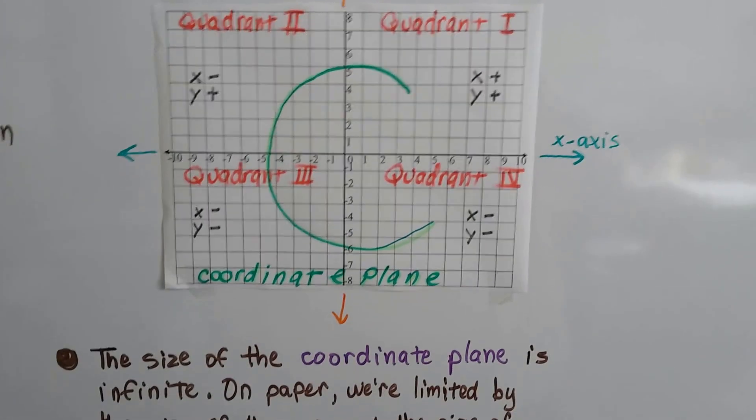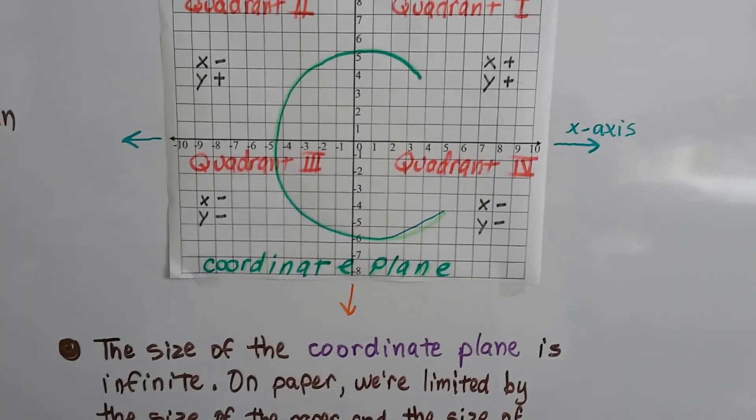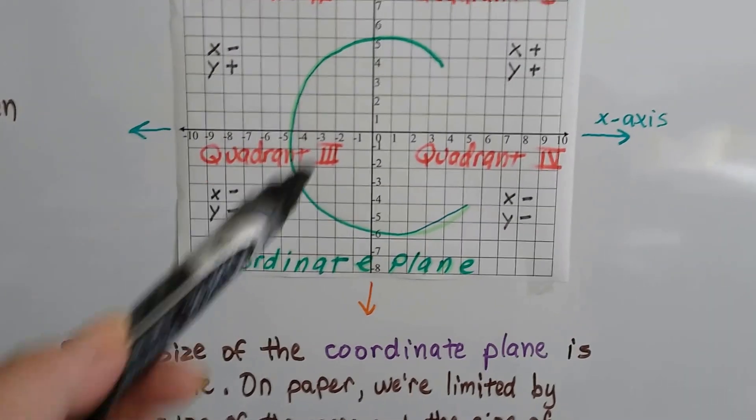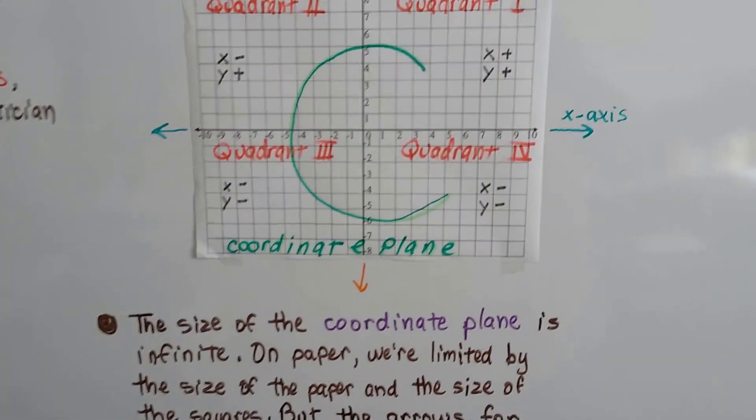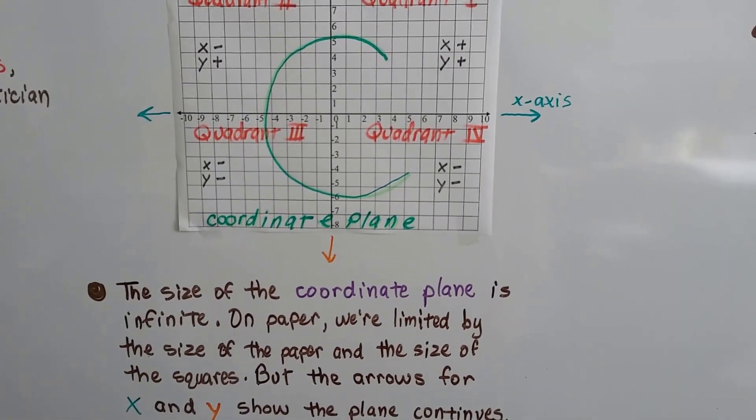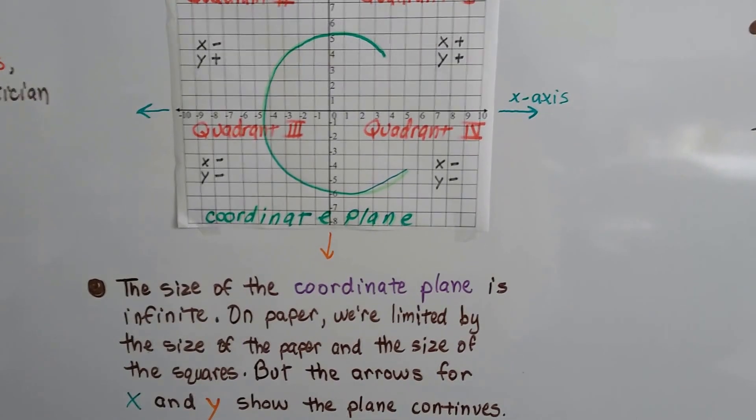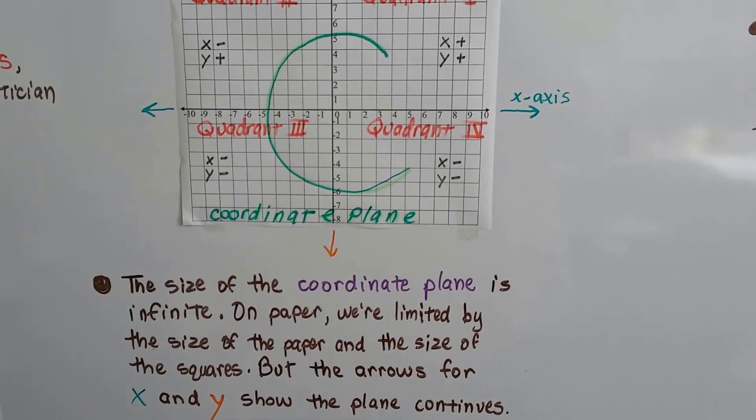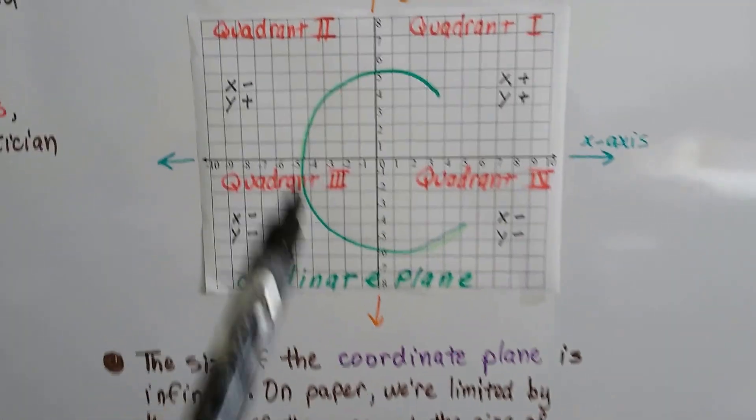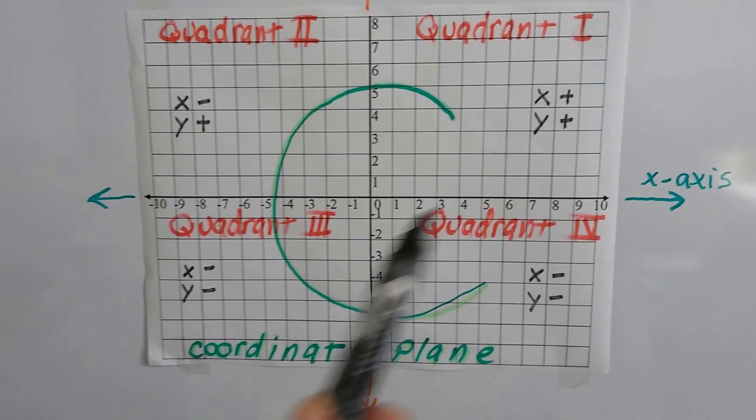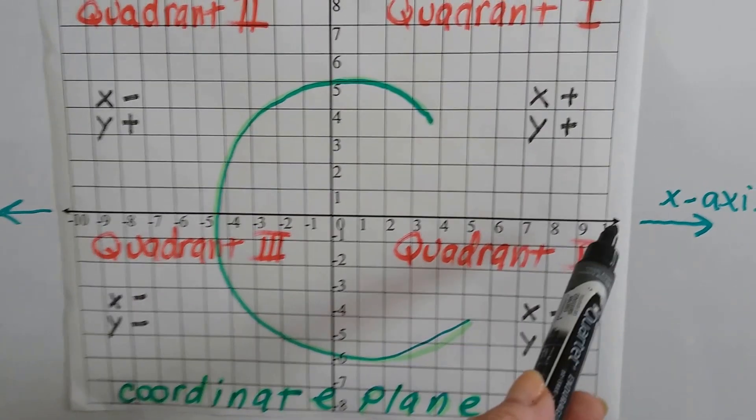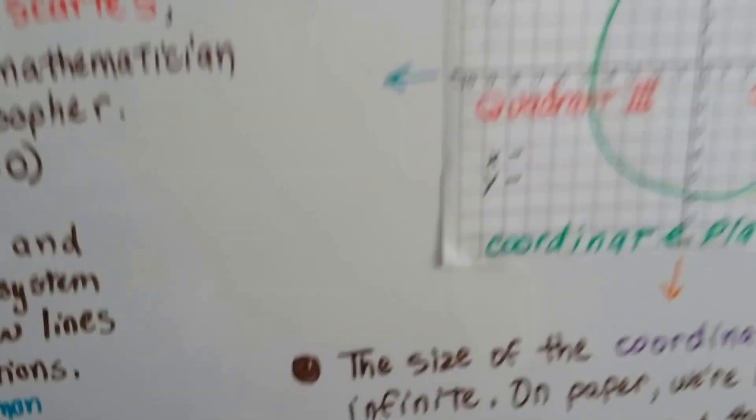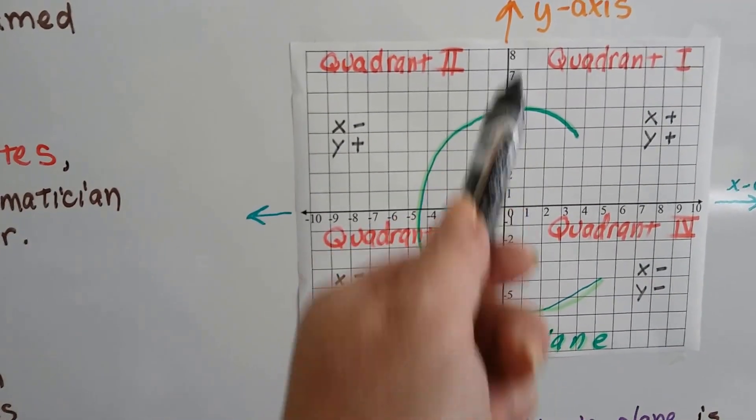If you look at this, the size of the coordinate plane is infinite because these arrows are going in each direction. On paper, we're limited by the size of the paper and the size of the squares, but the arrows for x and y show that the plane continues on and on for infinity. On this coordinate plane, because the paper is this size and the squares are this size, we go from the origin zero to a ten at the end of the paper. And on here, it goes up to eight. That's because of the size of the squares and the size of the paper.